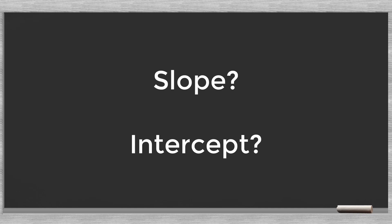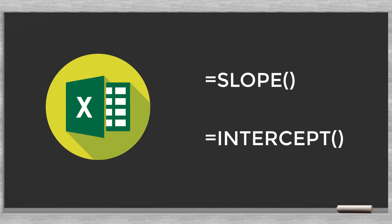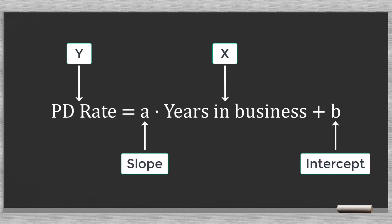How to find this slope and intercept? Well in Excel these two functions, equals slope and equals intercept. For both functions we need to define two arrays, the known ys and the known xs. Pay attention here, the y is the output, so the PD rates. The x is the input, so the years. With the slope and intercept known we complete the definition of our function.